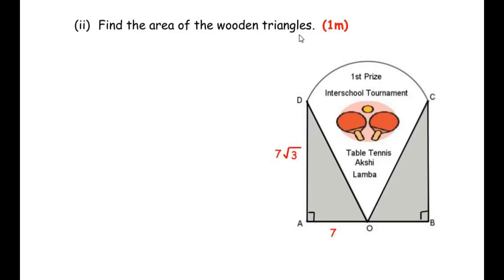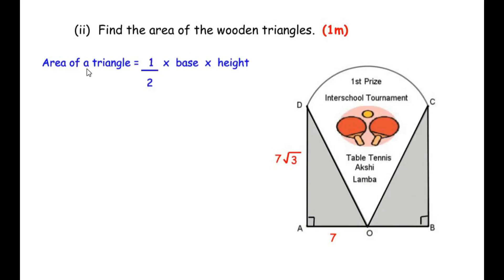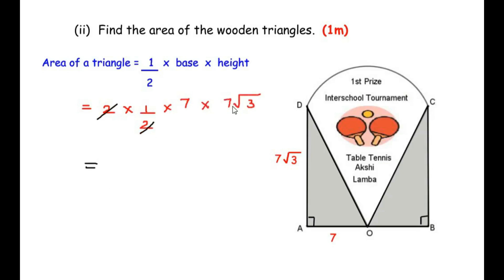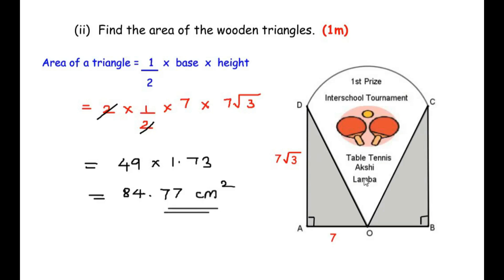Find the area of the wooden triangles — the gray shaded regions. The area of a triangle is (1/2) × base × height. With base AO = 7 and height DA = 7√3, and since there are two identical right-angled triangles: area of two triangles = 2 × (1/2) × 7 × 7√3 = 49√3. Using √3 = 1.73, we get 49 × 1.73 = 84.77 cm².